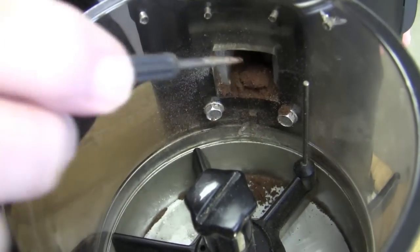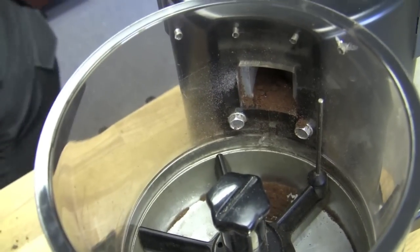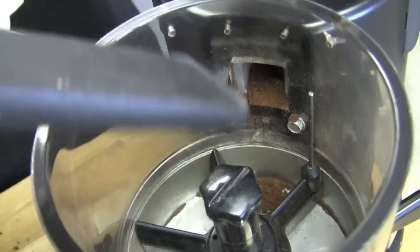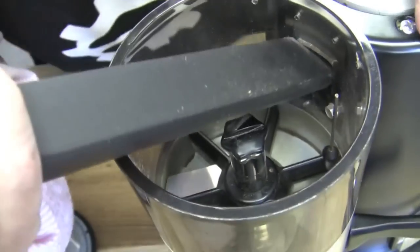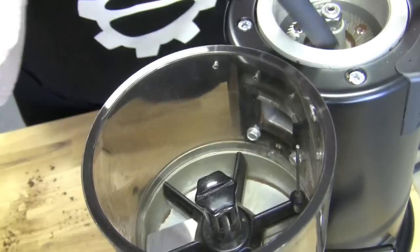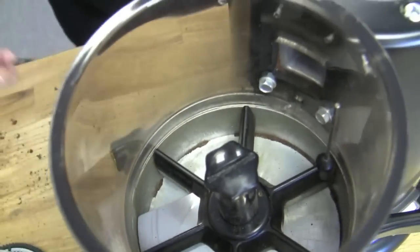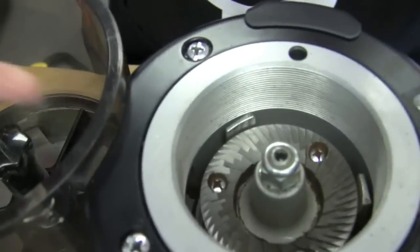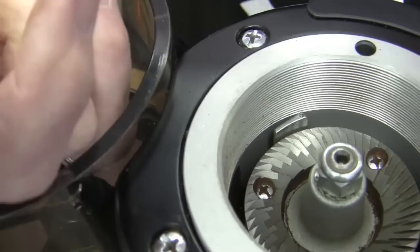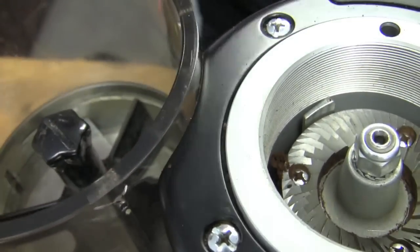Take the finger guard out. You can wash that with soapy water as well. See here? This is the chute where the coffee comes out. Clumpy. It's nice to vacuum that out. There's quite a bit in that chute there.